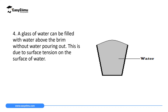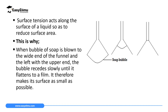Another scenario: a glass of water can be filled above the brim without water spilling out, because of surface tension on the surface of the water. The surface appears like a stretched elastic skin which keeps the water in contact above the brim. From all these examples, you can realize that surface tension acts along the surface of a liquid so as to reduce its surface area.